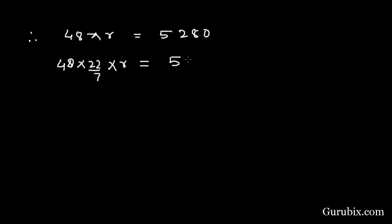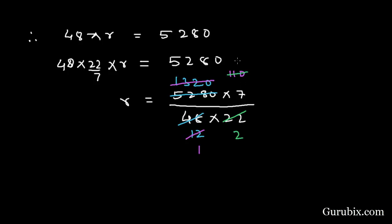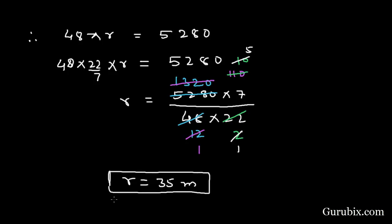We know pi equals 22 over 7, so r equals 5280 multiplied by 7 over 48 times 22. We can divide 48 by 4 to get 12, and 5280 by 4 to get 1320. Then divide 1320 by 12 to get 110, and 110 divided by 22 gives 5. So the radius equals 5 times 7, which is 35 meters.